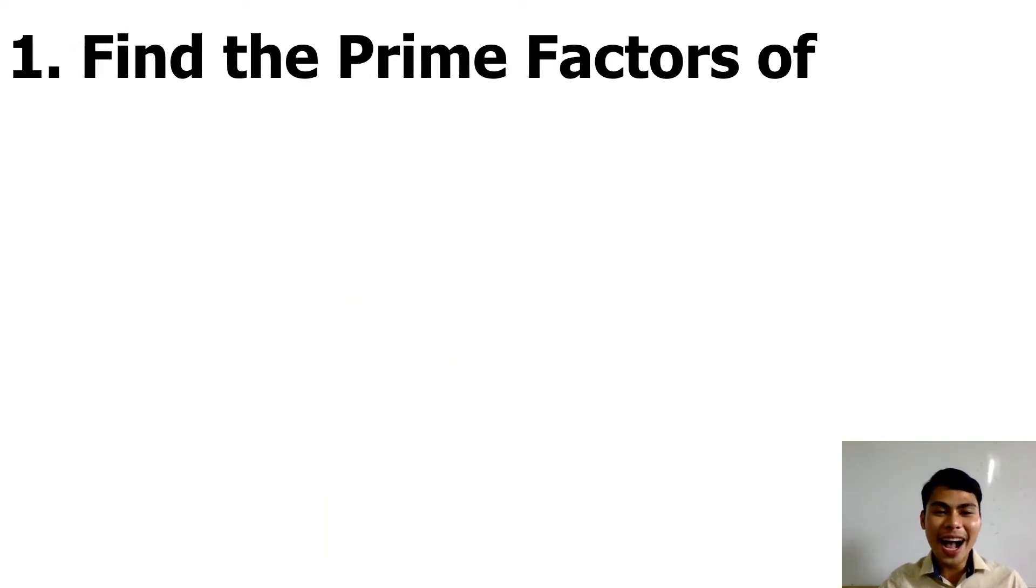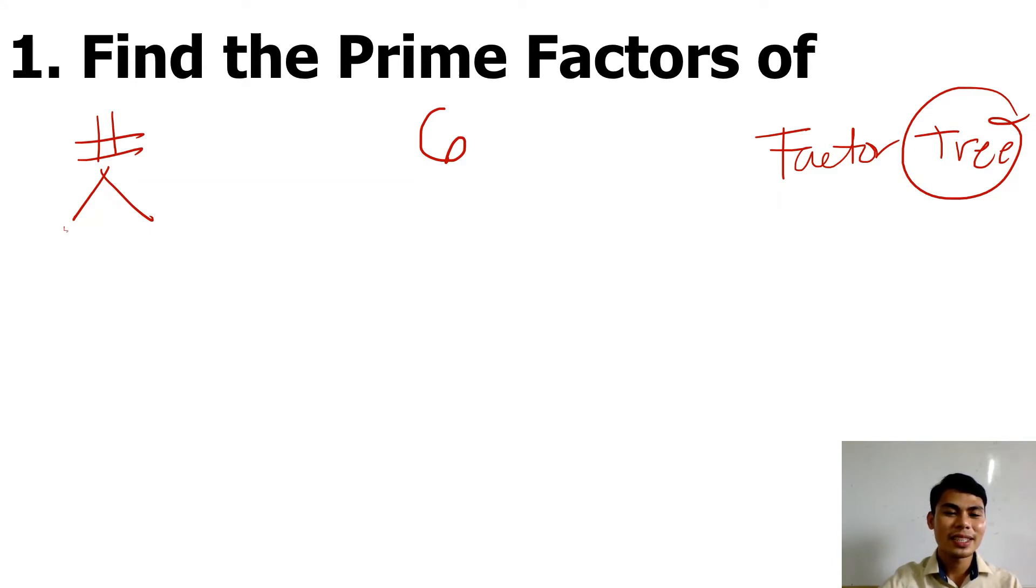Now let's have the first example. Find the prime factors of, let us say, 6. There are many ways of getting the prime factors, but what I'll teach you is the Factor Tree. It's a tree because we will find factors of that number, and if there are more factors, we find them again. They're like branches of a tree.